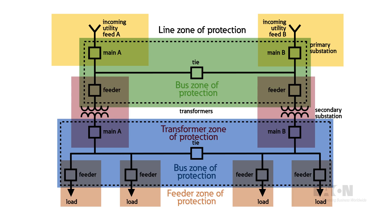Notice that the zones of protection overlap. This overlap is intentional to avoid leaving any area unprotected. Additionally, two levels of protection are provided within the overlap zones. A fault in an overlapping area would be able to be cleared by either of the applicable protective methods, resulting in primary and backup protection.